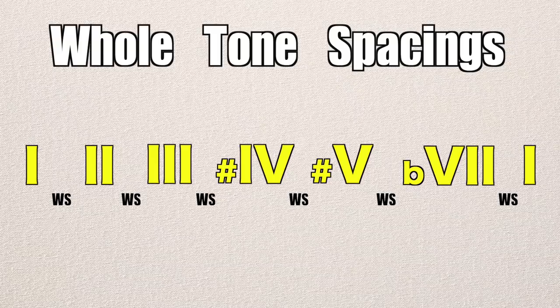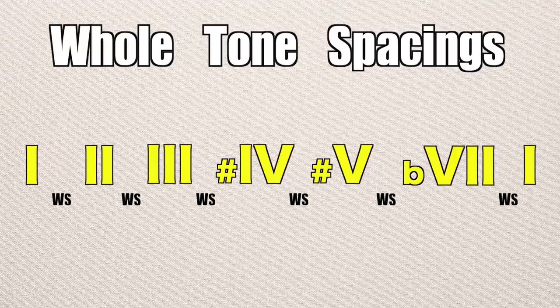Next on our list is the whole tone scale, and it's easy enough to remember because every scale degree is separated by one whole step. It's an interesting sounding scale, and since everything is evenly spaced, no note has more or less weight than the others. Because of that, it sounds like it could go on and on forever. You can use this scale whenever you see an augmented seventh chord, which is fairly rare. You'll also hear it used to create sound effects in many video games.